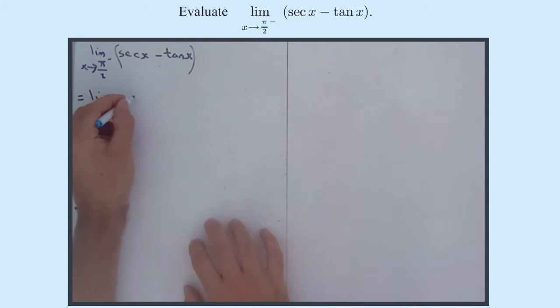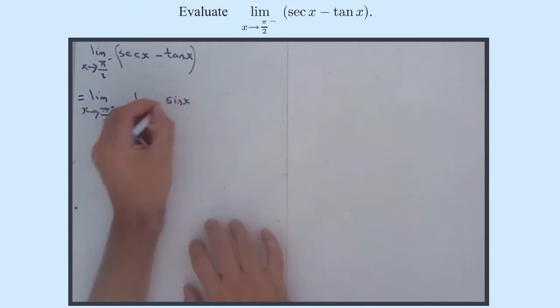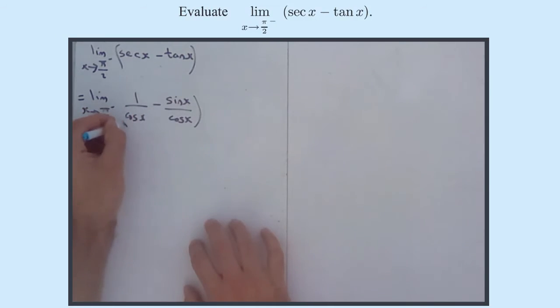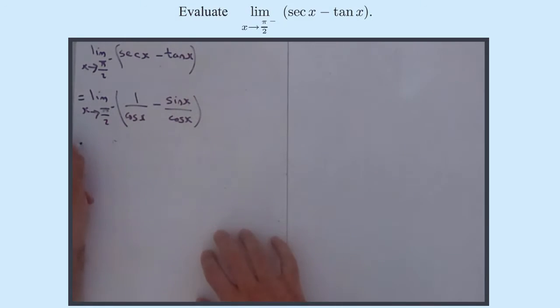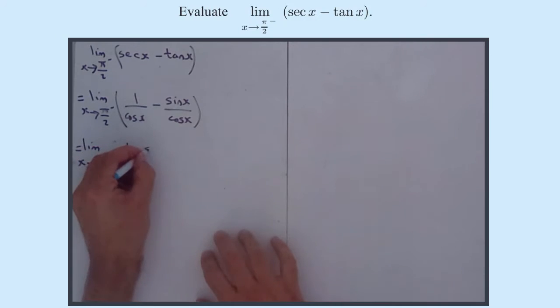Sec x is 1 over cos x, minus tan x, we know that's sine x over cos x. Okay, so now, handily, we've got a common denominator of cos x, so it's just the limit as x approaches pi by 2 from something less than pi by 2 of 1 minus sine x over cos x.